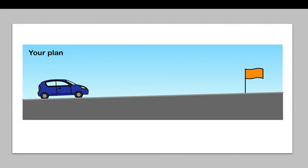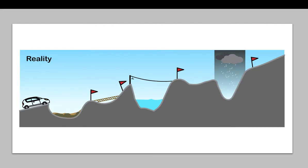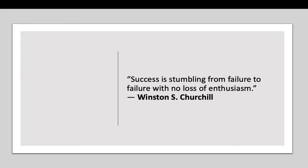When you set out on a journey with a student to set up a training program, in a perfect world it would start at point A and go to point B. The road would be smooth and the challenges minimal, but in reality the training program may involve challenges at every step of the way, where success is stumbling from failure to failure but with no loss of enthusiasm. The trainer plays a very important role in working with their student on that journey, and the student themselves plays an important role as well. At the end of the program you'll reach the point of a course evaluation and reflect back on what that journey has been like together.